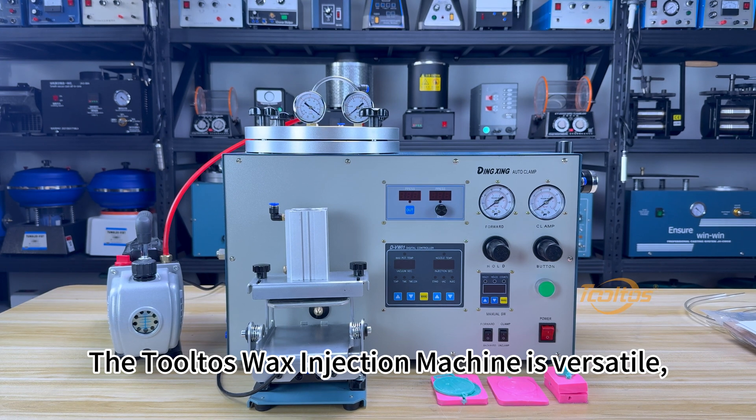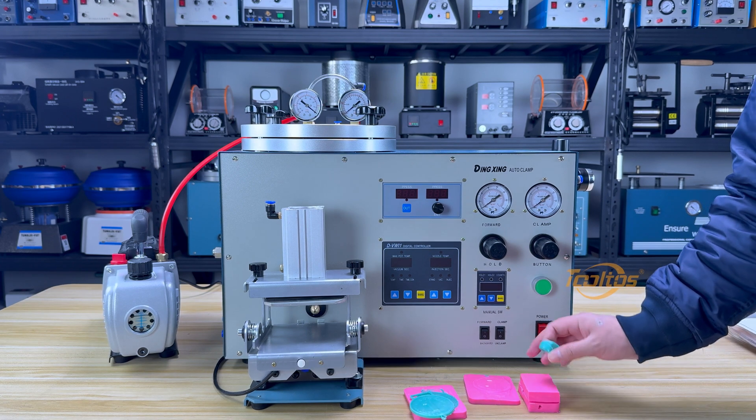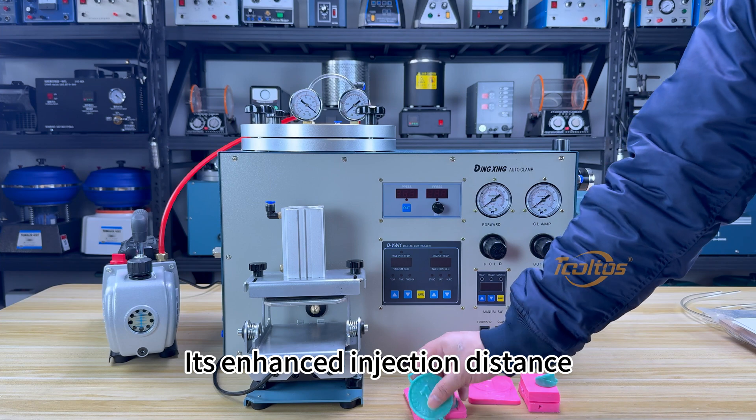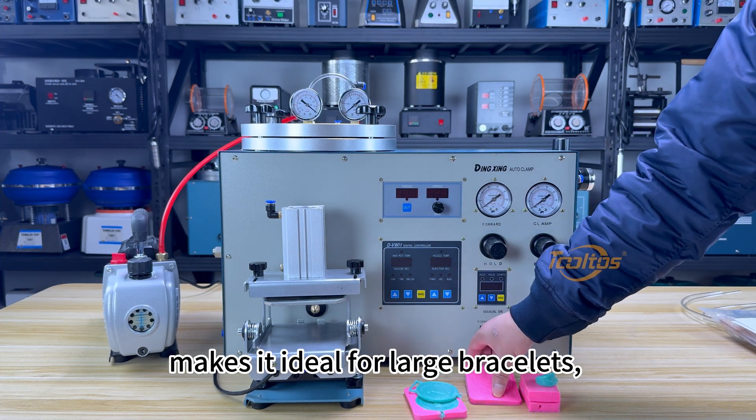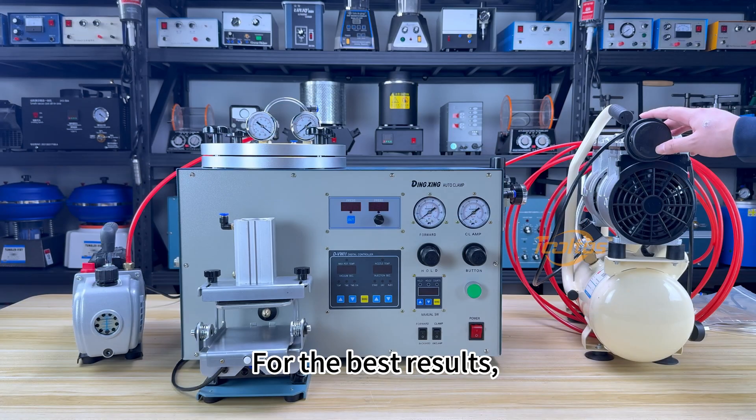The Toltos wax injection machine is versatile, perfect for creating intricate wax molds for gold, platinum, K gold, silver, and stainless steel jewelry. Its enhanced injection distance makes it ideal for large bracelets, ultra-thin designs, and high-precision micro inserts.